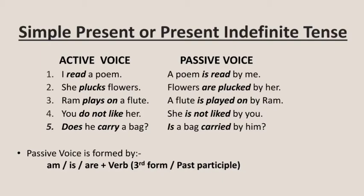This sentence is in simple present tense in active voice. When we want to change it into passive voice, it will become: a poem is read by me. Example two: she plucks flowers — in passive voice it becomes, flowers are plucked by her. Example three: Ram plays on a flute — in passive voice the object, a flute, becomes the subject: a flute is played on by Ram.